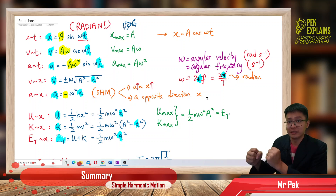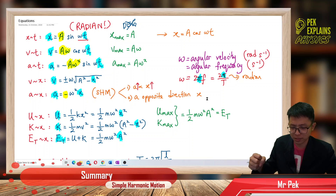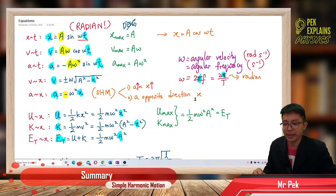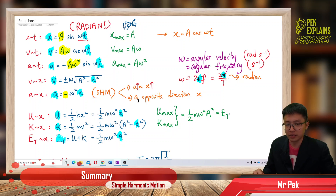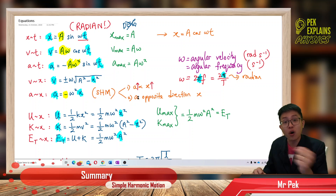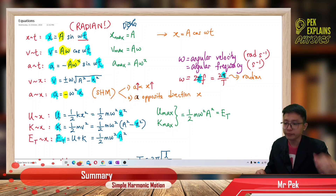When you extend the spring in the positive direction, the spring pulls back in the opposite direction. The expansion of the spring is x, and the spring's restoring force — related to acceleration by F = ma — acts in the opposite direction. That is simple harmonic motion.